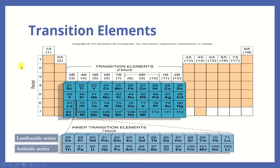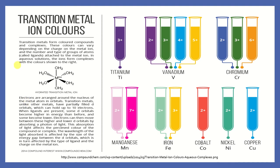The coordination compounds that we will look at in this chapter have a central metal ion that is part of the transition elements. This is an important group of elements because we have quite a number of them in the periodic table. We call them transition elements, and down here are what are called inner transition elements. The important thing about these elements is that they can have more than one oxidation state, which comes from the electron configuration. Another characteristic is that they can create quite a variety of colors.